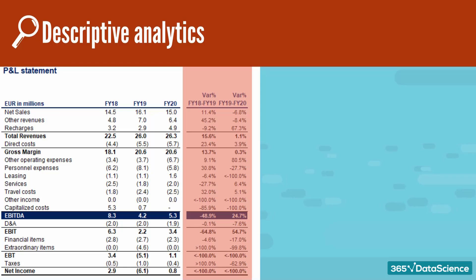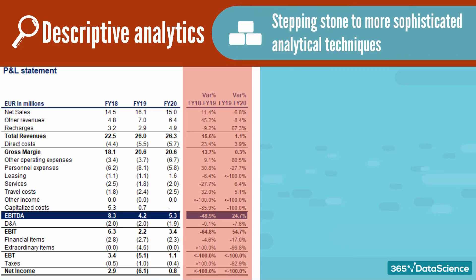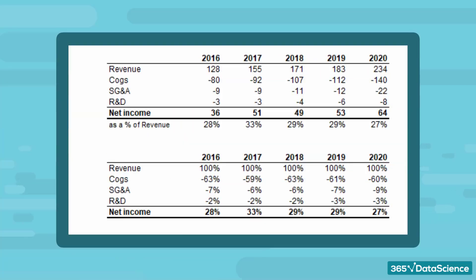Frequently, historical analysis helps us uncover some of the key drivers of business performance and is often considered as a stepping stone for progressing to more sophisticated analytical techniques. Historical data typically includes an organization's financial and operational metrics, as derived from sources such as past financial statements, invoices, and operational reports. Here is an example of a chart showing us how the profitability of a company evolved over several years.